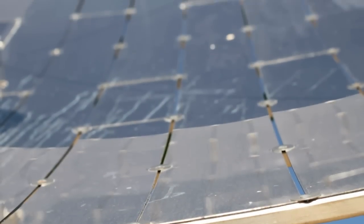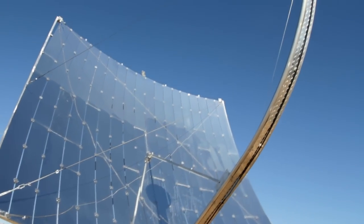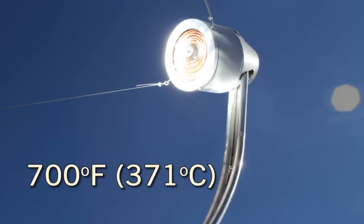Mirrors, located across the face of the solar dish, reflect sunlight back to a focal point where temperatures can reach 700 degrees Fahrenheit.